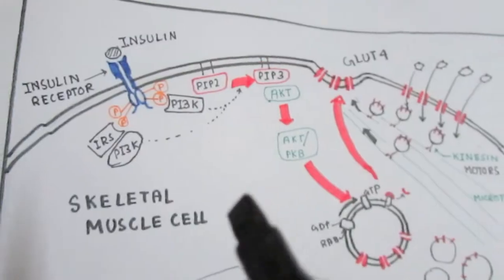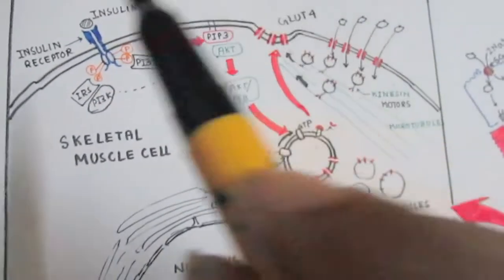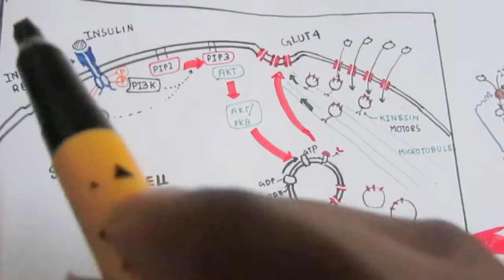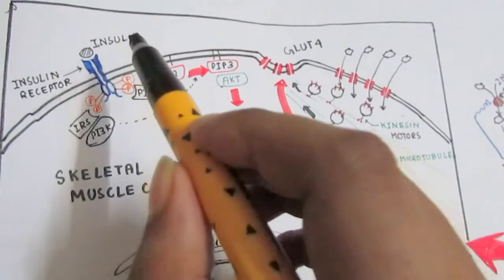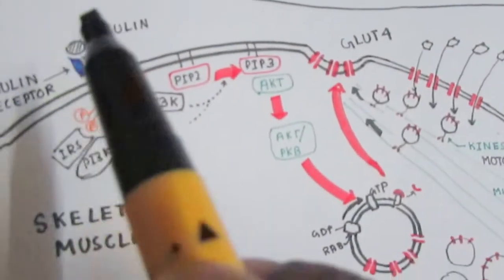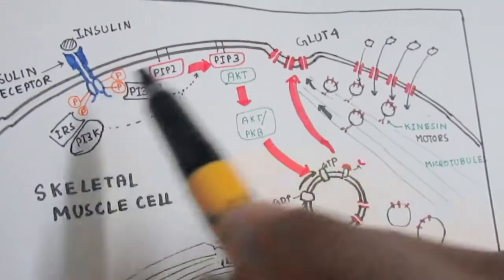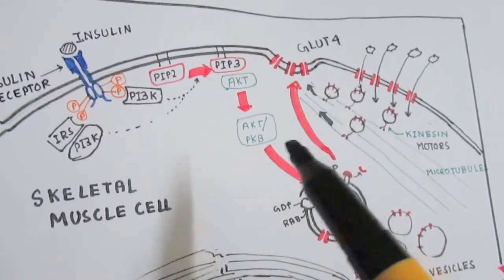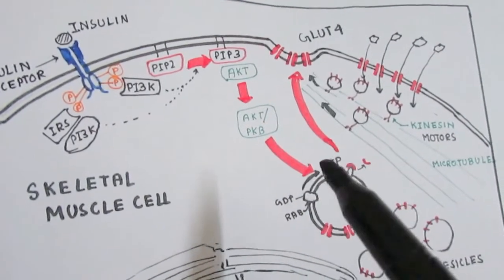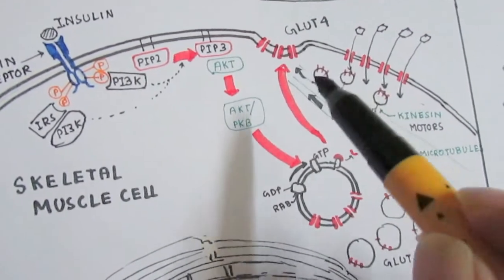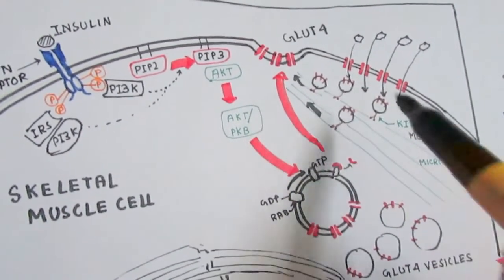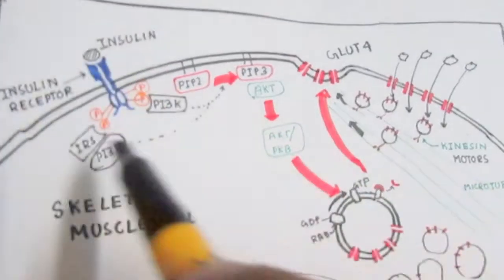This signaling is important to understand diabetes. In type 1 diabetes, insulin level is pretty low. When insulin level is low, this signaling doesn't take place, or if it takes place, it's pretty inefficient. We don't have many GLUT4 transporters on the membrane.